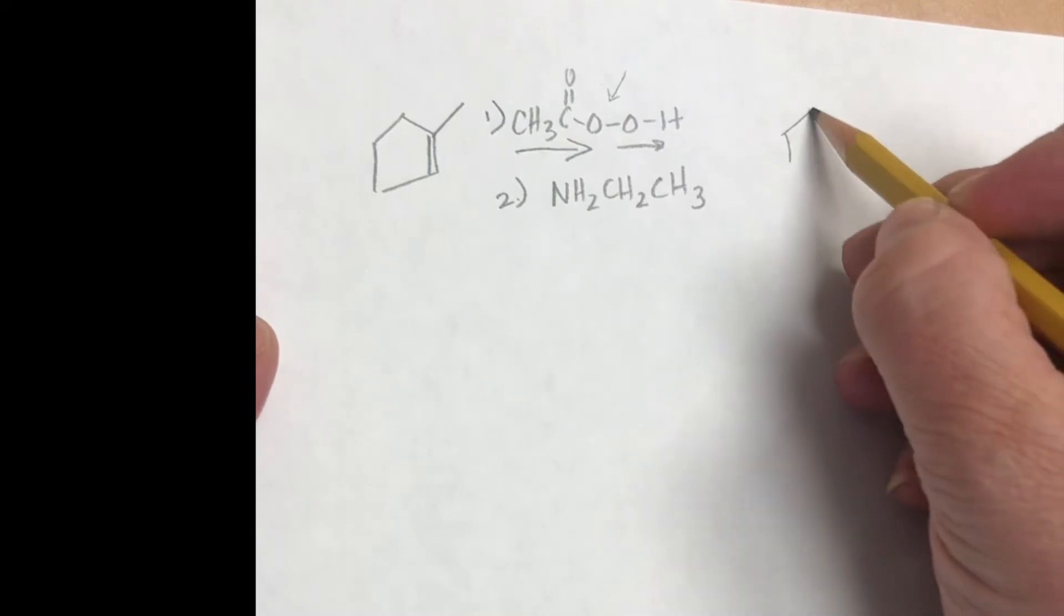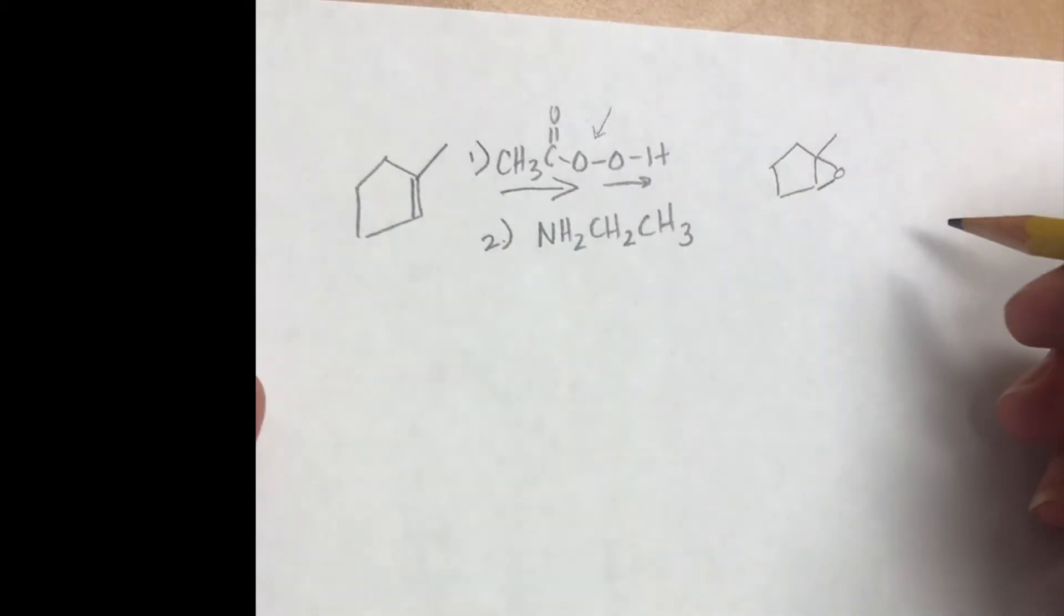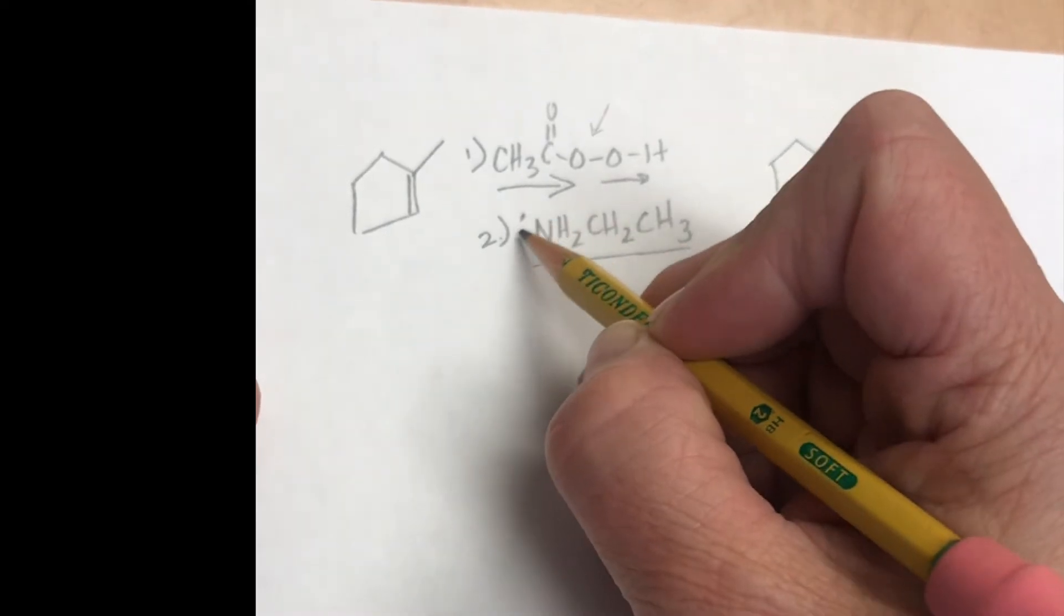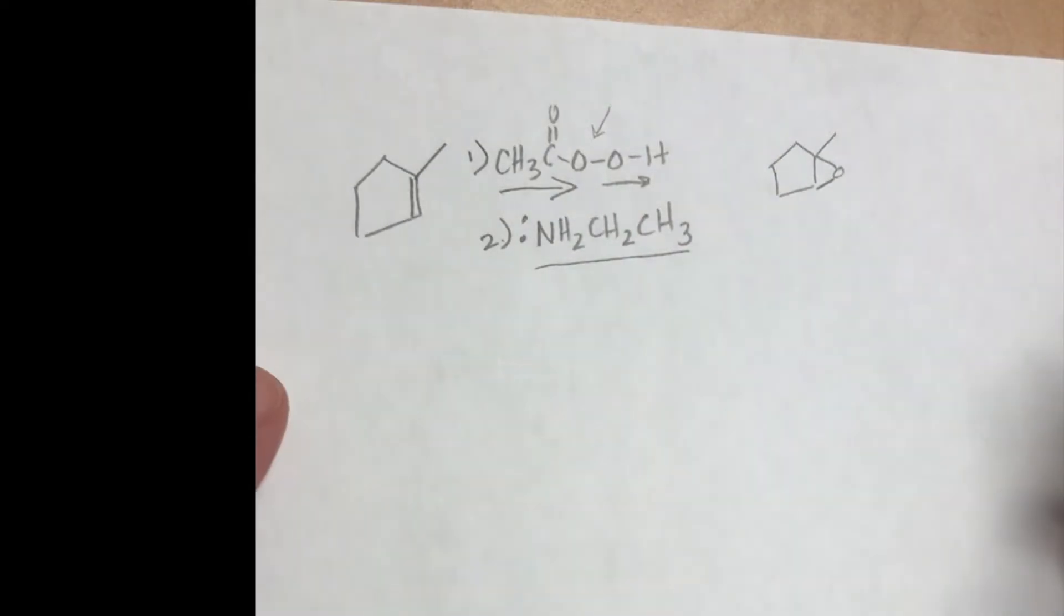If we draw the product of that first step, we get rid of the double bond and we form the epoxide that looks like that. In the second step, we have this nucleophile shown right here, the lone pair on the nitrogen and that is going to be what attacks the epoxide ring and opens.